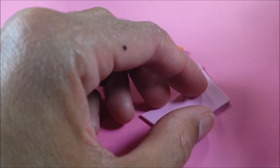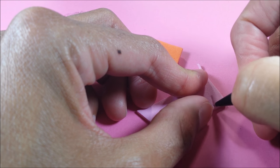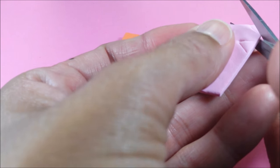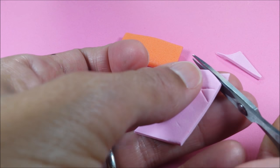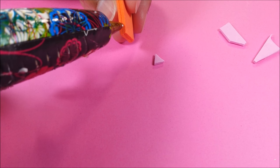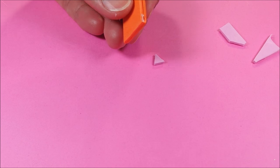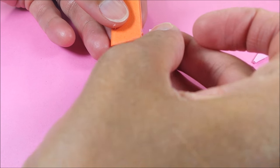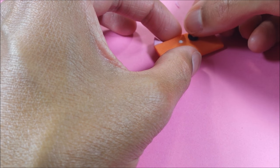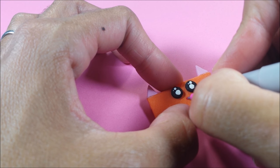For my cat, I have here just an orange base and I'm just drawing triangles for my ears, which I can cut out and glue to the corners.